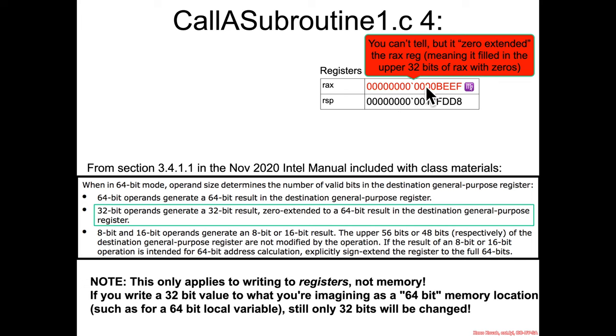Now previous versions of the class had just happened to have a nice RAX value that showed that you were smashing the upper bits, but this one, it doesn't show. So I just have to point it out to you. And here's the section from the manual that says if you have a 32-bit operand, it's going to zero extend into a 64-bit result in the general purpose register. Now, one quick point I want to make, this zero extension only applies when you're writing to registers, not to memory.